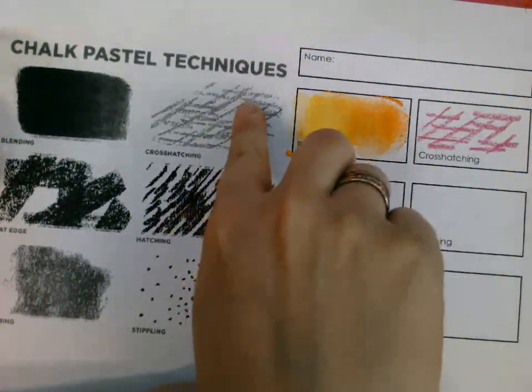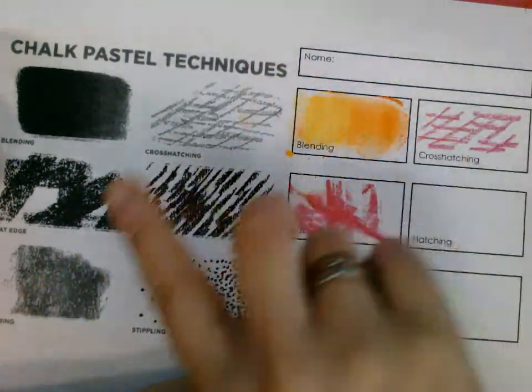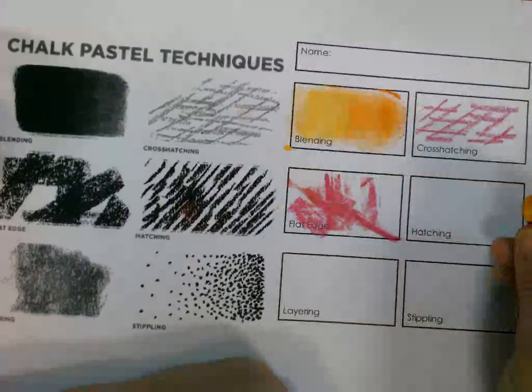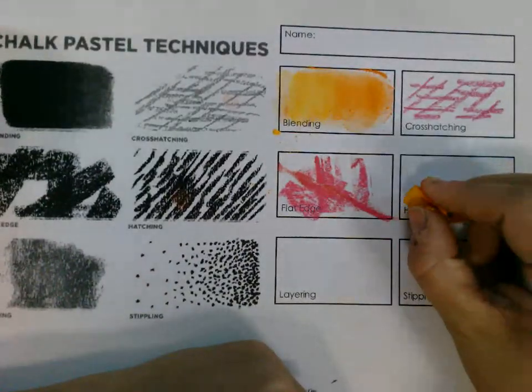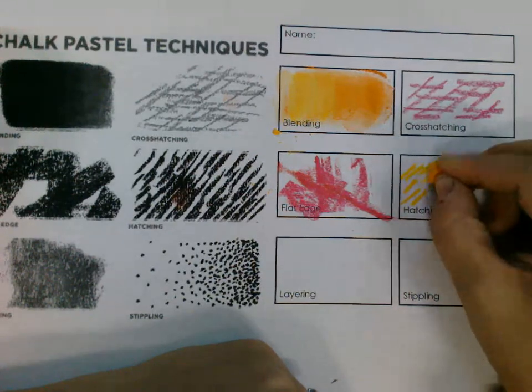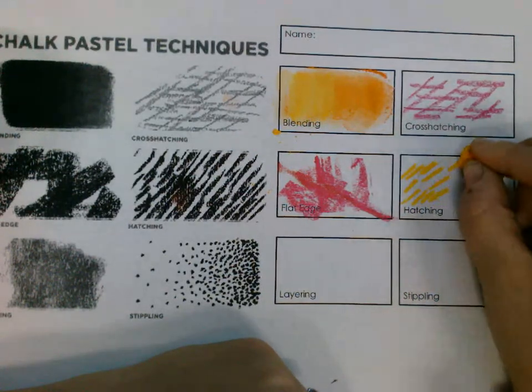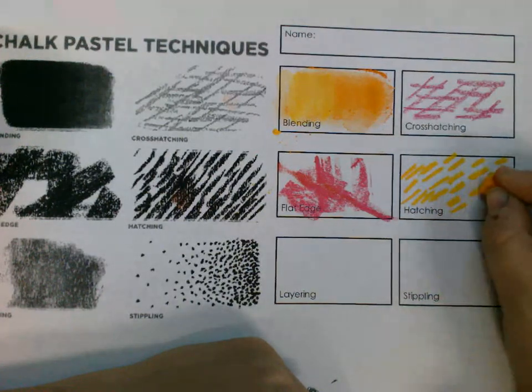Now hatching is very similar to cross-hatching, except you're only going in one direction. You're not going in different directions. You're going one direction and continuing that. We see this a lot in post-impressionism and like Van Gogh's stuff. It's pretty cool. So little lines in one direction. That's hatching.